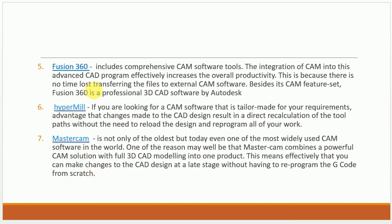Next is Fusion 360, a package from Autodesk. It is a plug-in that comes with Autodesk products. It has the advantage of allowing you to import files from other CAD software, process feature-based machine parameters, and generate G-code and M-code output.